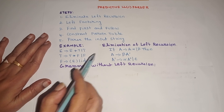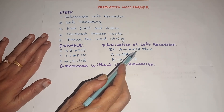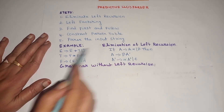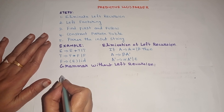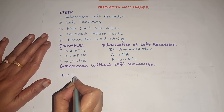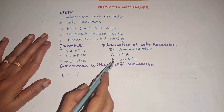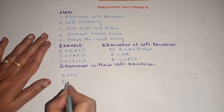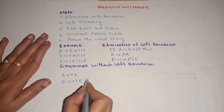Now let us consider rule number 1. According to this rule, beta is T, alpha is plus T, and A is E. So A tends to beta A-dash means we can write it as E tends to T E-dash. And the second rule, A-dash tends to alpha A-dash or epsilon, means E-dash tends to plus T E-dash or epsilon.